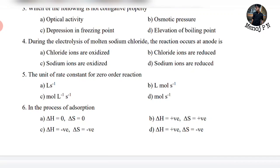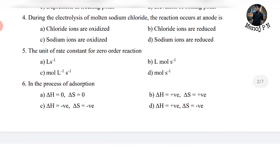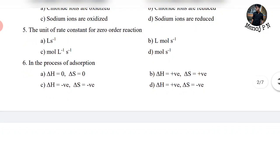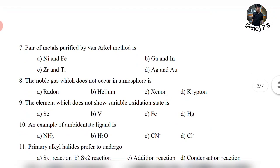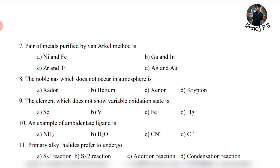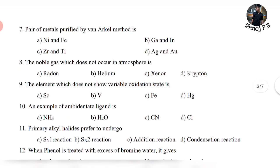During electrolysis of molten sodium chloride, the reaction at the anode: chloride ions are oxidized — direct question. Fifth one: the unit of rate constant of zeroth order — direct question, options are straightforward. Sixth: when it comes to adsorption, delta H, delta G, and delta S — all three are negative. Seventh: pair of metals purified by van Arkel method — Zr and Ti. That's the direct answer.